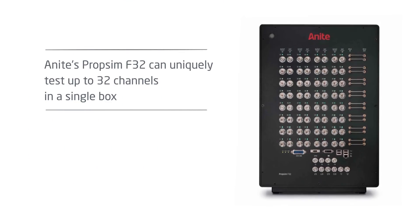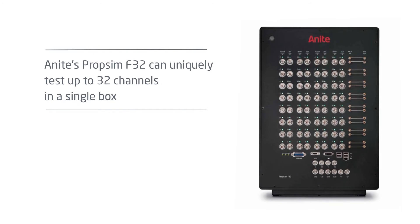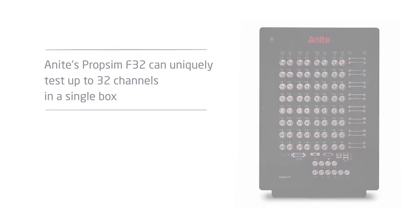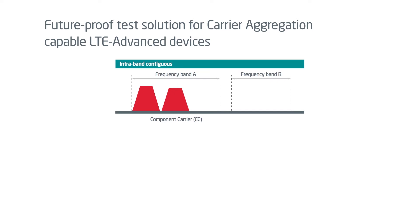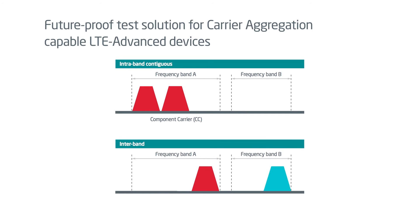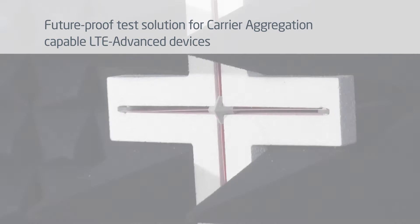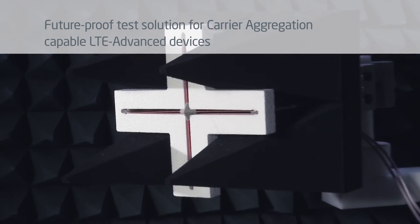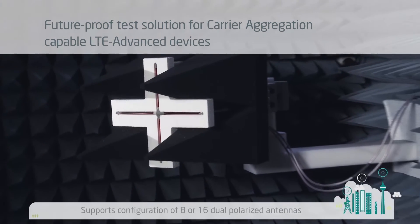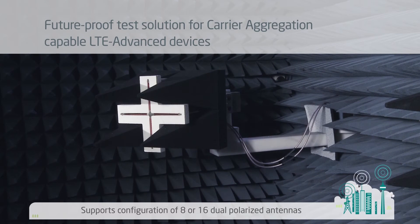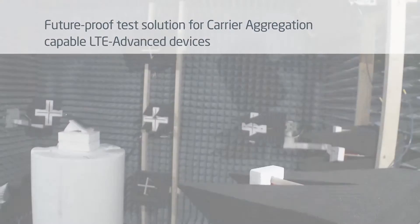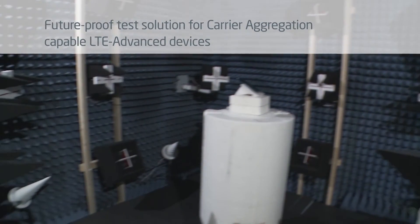Anite's PropSim F32 can test up to 32 channels in a single box, making it a future-proof and cost-effective solution for testing carrier aggregation-capable LTE Advanced devices that require a greater number of channels. A single PropSim F32 emulator can support a configuration of 8 or 16 dual-polarized probe antennas, creating a multi-probe environment around the device under test for even more accurate performance testing.